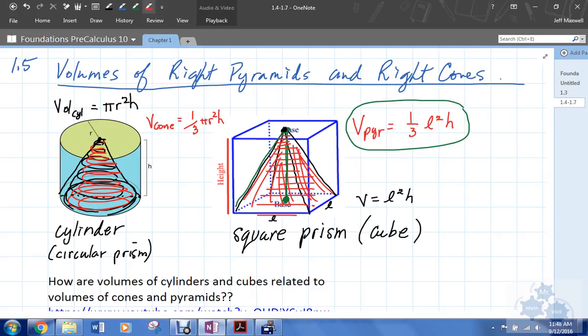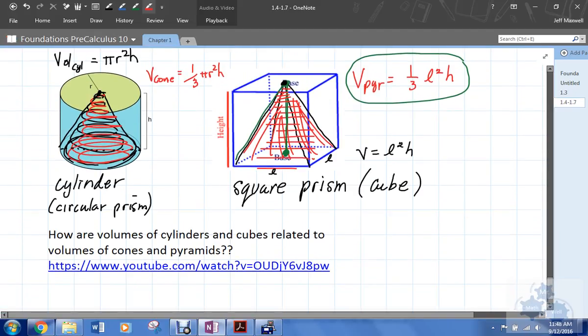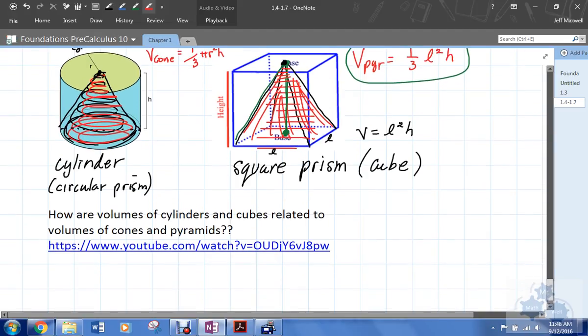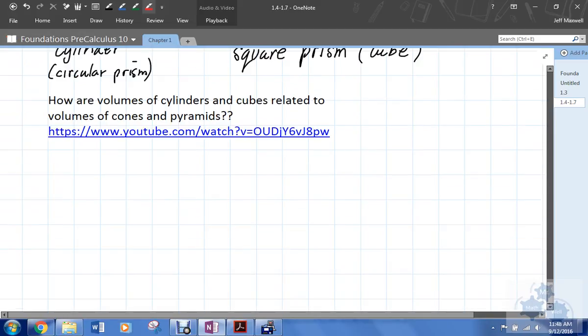So whatever the volume of the cylinder would be, that's the volume of the cone. And that happens for pyramids of different area of base as well. So it's the same relationship. The volume is always one-third.